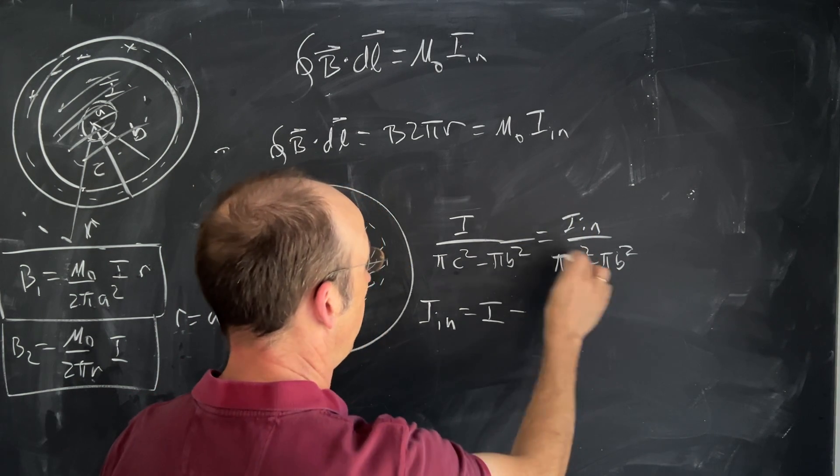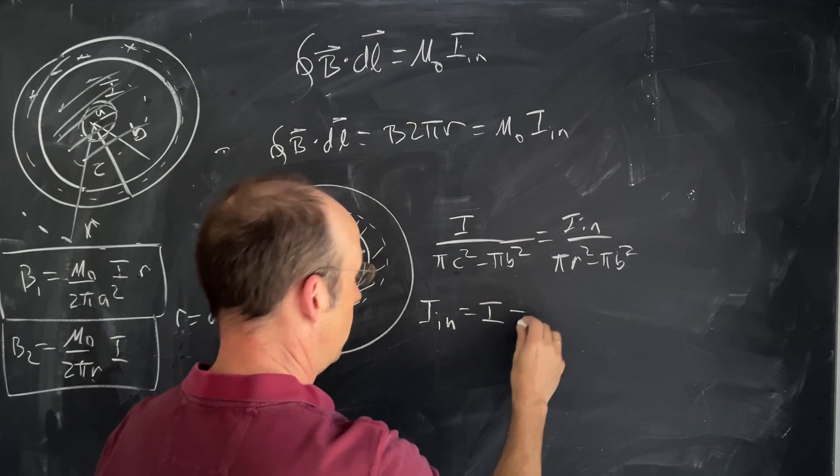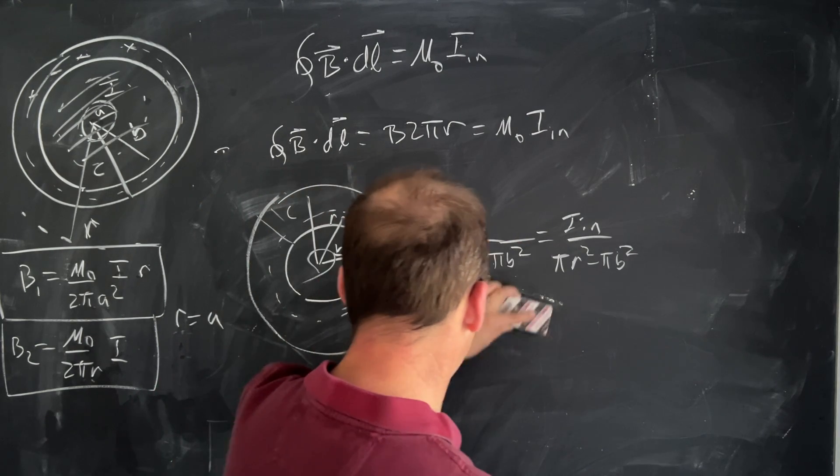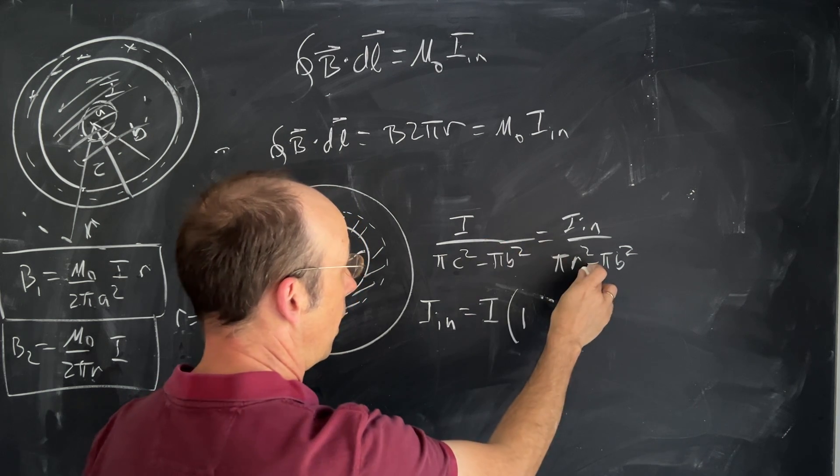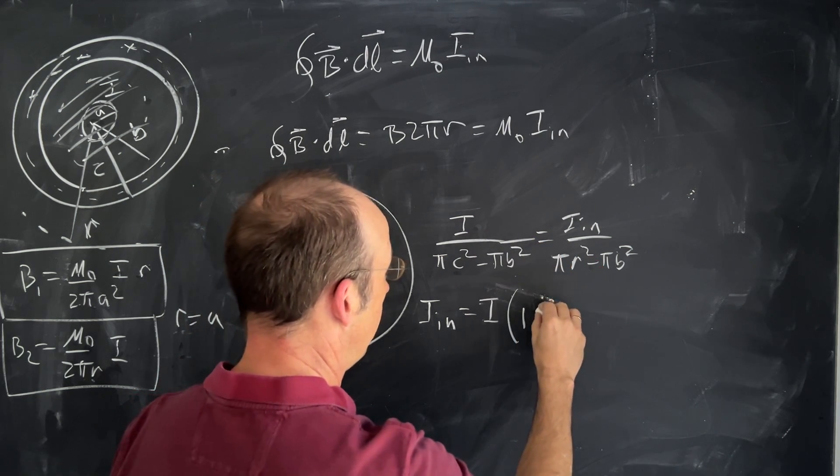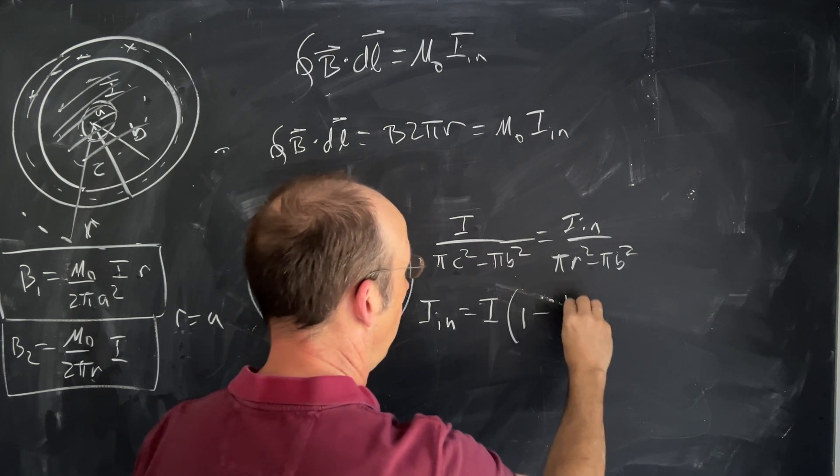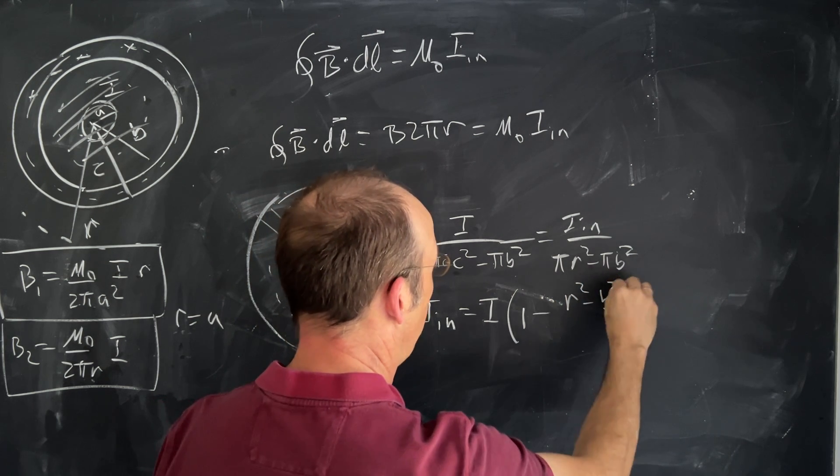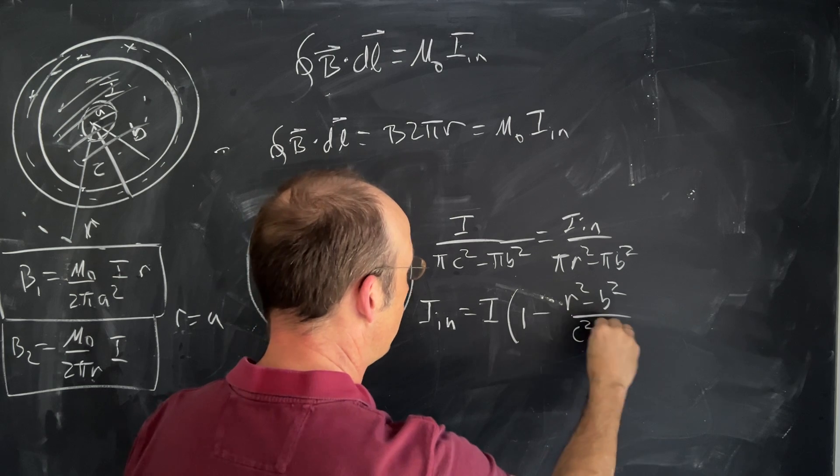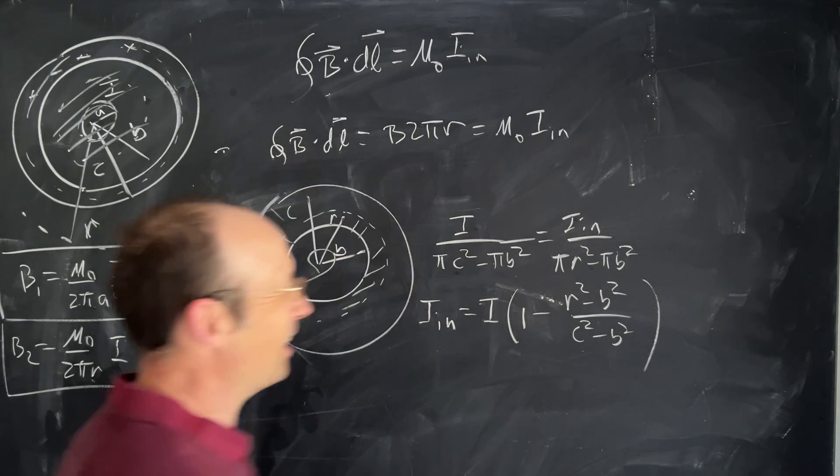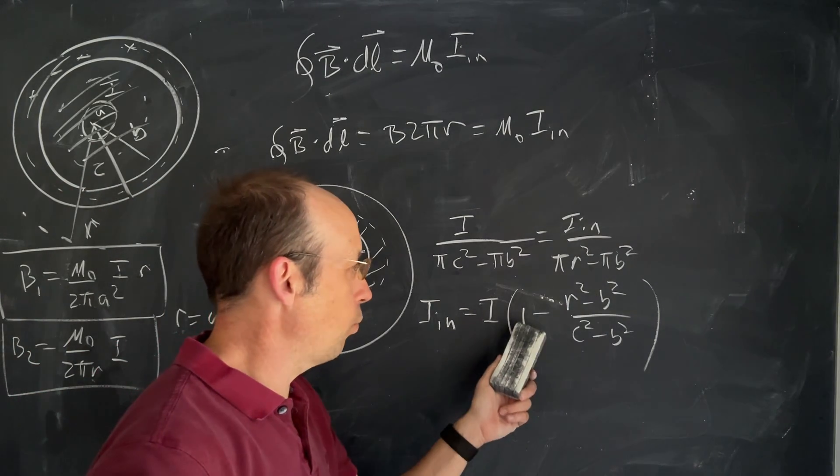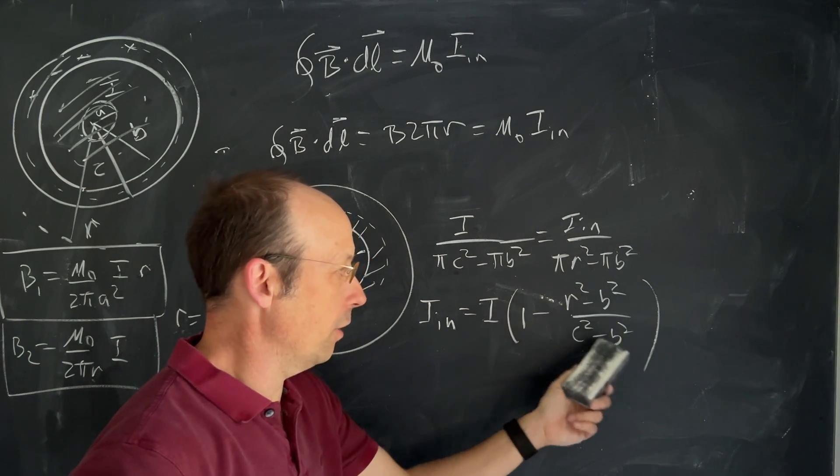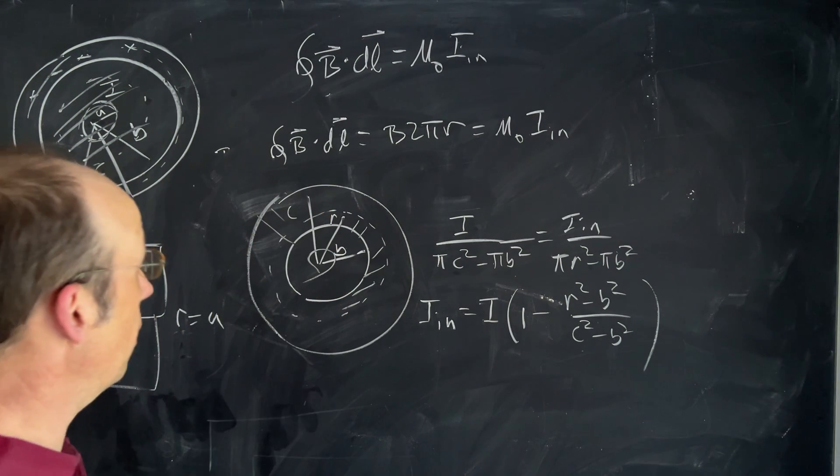I'm going to multiply by this. So let's just write this as I times one. And then I'm going to multiply by this. The π's cancel and I get minus (R² - B²)/(C² - B²). And that's not the best form, but I think it's fine. It does have the right units: one, and that has a unitless quantity right there.